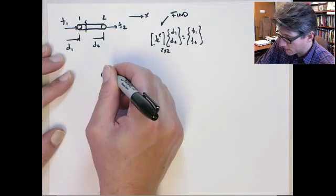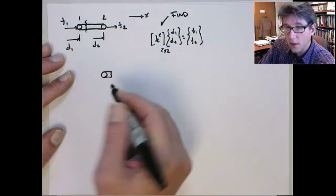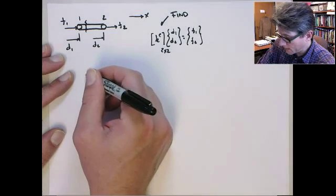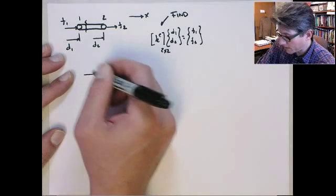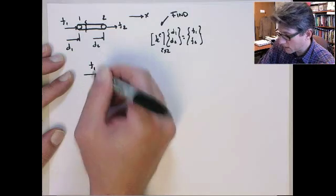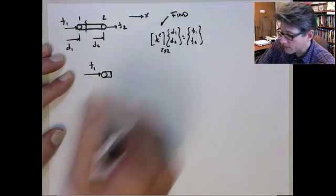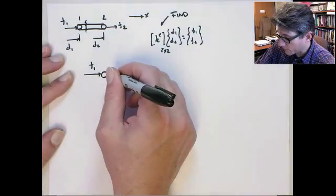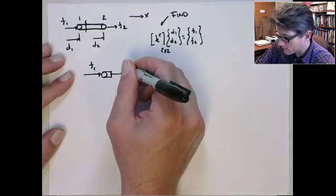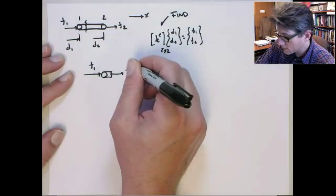So if I redraw that, this is node one. Here's a little bit of the section just to the right. We have the externally applied force, f1,